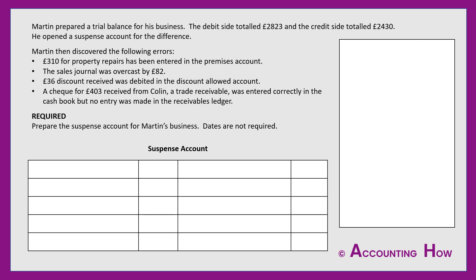My advice when doing these questions is to skim through the errors — don't read every single word or figure, just get a feel for them. The first one: some property repairs have been entered in the premises account. Second: the sales journal was overcast by too much. Third: discount received has gone in discount allowed. And the fourth: a cheque from Colin, a receivable, was put in the cash book but no entry was made in the receivables ledger.